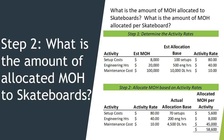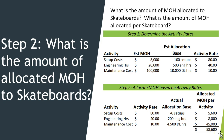In step two, this is where we need the information for which product we're allocating to. Once we have the activity rates, I've copied the activities and rates down into this table, and now I'm putting in the actual allocation base for skateboards: 70 setups, 200 engineering hours, and 4500 direct labor hours. Then I multiply them by the rates to get the total overhead for each activity and add them up — that's an extra step we have to do in activity-based costing.